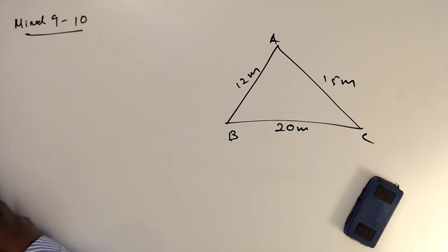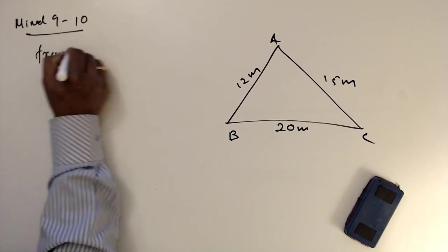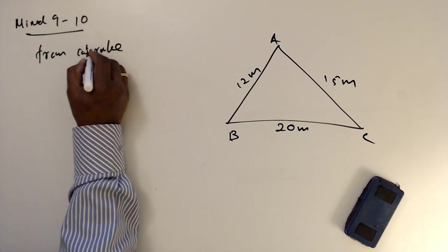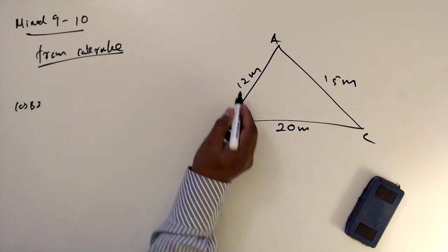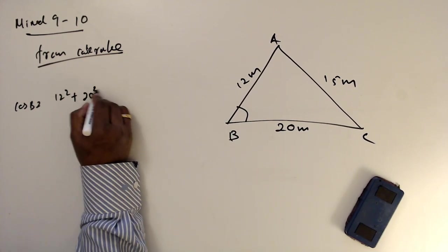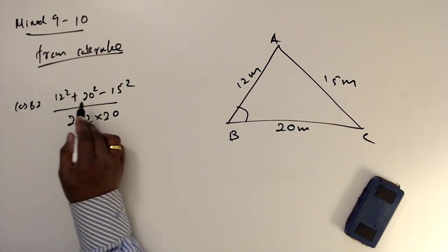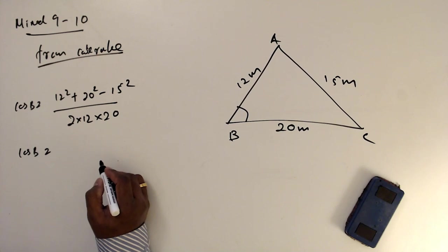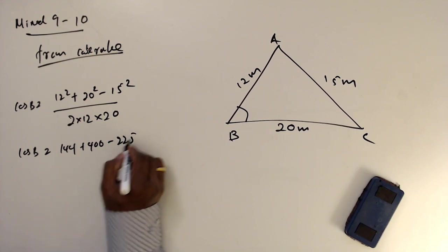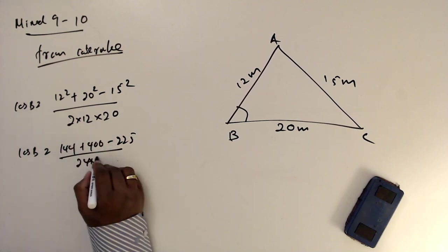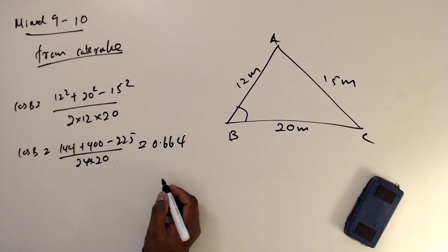Since I know three sides, the best formula to find the angle is the cosine rule. So from the cosine rule, I'm going to find angle B. Cos B equals 12 squared plus 20 squared minus 15 squared, over 2 times 12 times 20. So cos B equals 144 plus 400 minus 225, over 480, which gives 0.664.